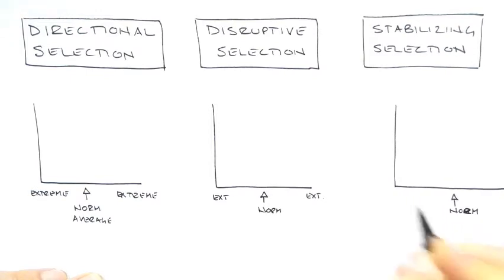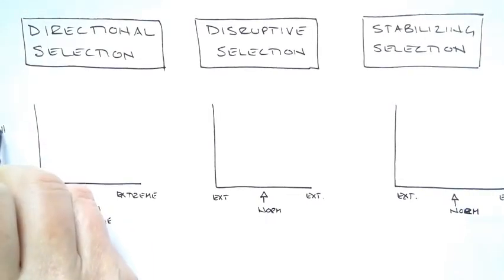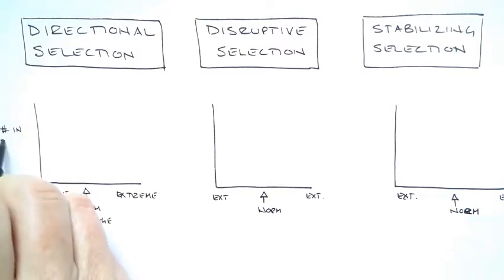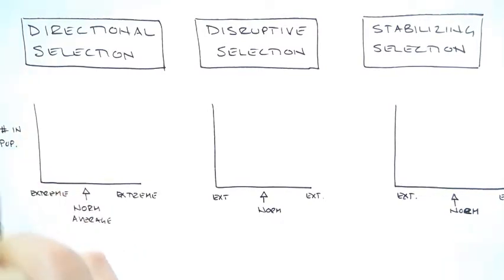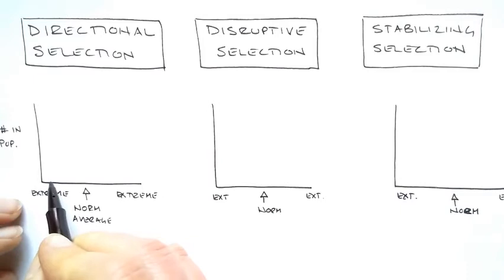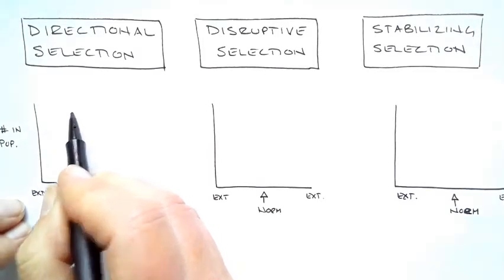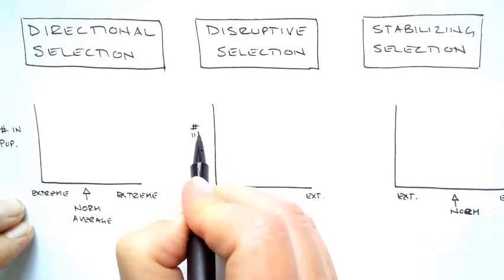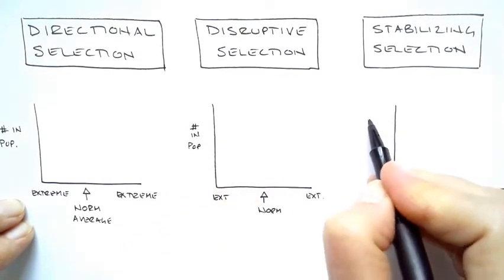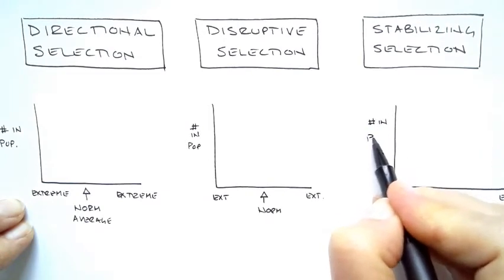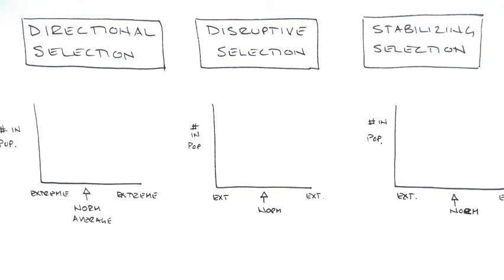And the extremes. Okay, the y-axis is the number in population. So it's basically the total number of organisms. Lower down would be fewer organisms, higher up would be more organisms. So this is the number in population. These are actually histograms and we're going to be looking at basically the top of the curve. I'm going to be using two colors.